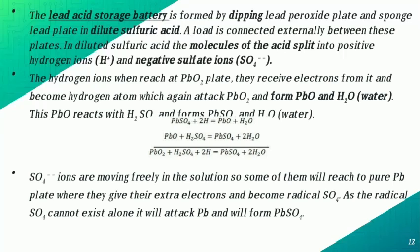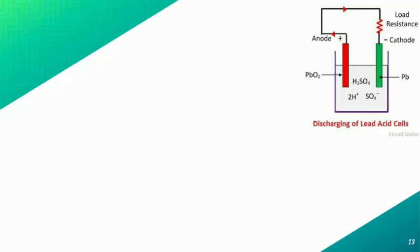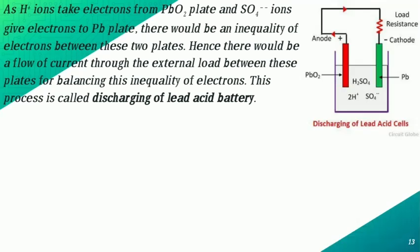The hydrogen ions which reach the PbO₂ plate receive electrons and become hydrogen atoms, which then attack PbO₂ to form PbO and H₂O. This PbO reacts with H₂SO₄ to form PbSO₄ and H₂O. As SO₄ ions move freely in the solution, some of them reach the pure Pb plate where they give their extra electrons and become radical SO₄. Since radical SO₄ cannot exist alone, it attacks Pb and forms PbSO₄.